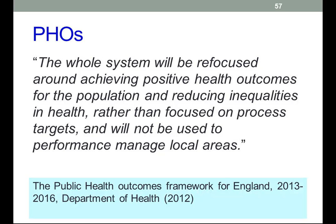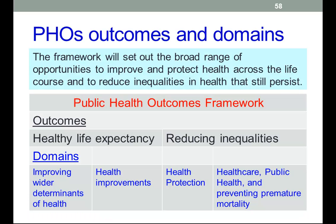I guess it means that specific targets will not be set, but local authorities will be assessed on the improvements that they make in the indicators. This is just how the mapping works between what I call domains and outcomes. In reality, it's not that much different from Marmot.